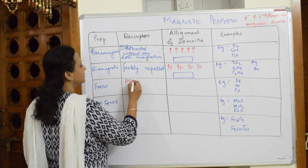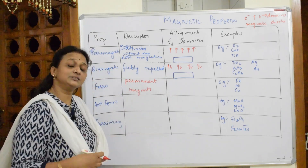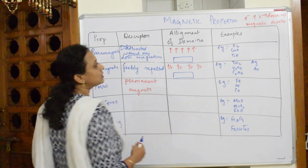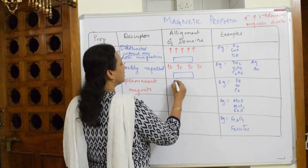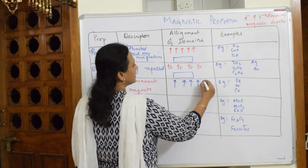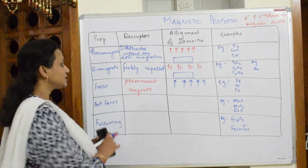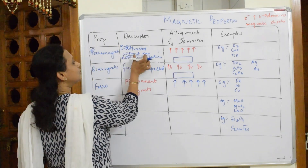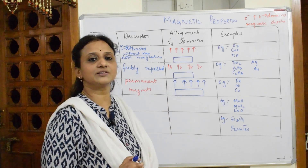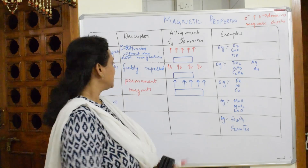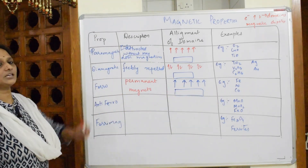Ferromagnetic substances are permanent magnets — these are the magnets we used as children. When I look at their magnetic dipoles or domains, all are aligned in the same direction. The key difference from paramagnetic is: if I remove the magnet, paramagnetic substances lose magnetism, but ferromagnetic substances retain permanent magnetism even without the magnet, because all electron alignments remain in that direction.